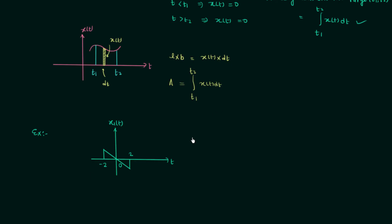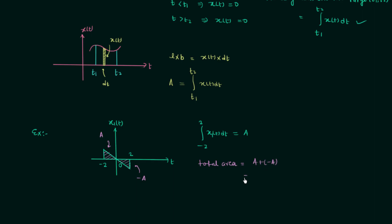We will use our second formula and integrate from minus 2 to 2 signal x1(t) dt to find the area. But in this particular case there is no need to perform the calculations, because you can see this area is the same as this area — one is above the x-axis and one is below. So if one area is A, the other is minus A, and the total area is A plus minus A, which equals zero.